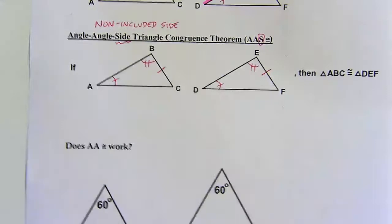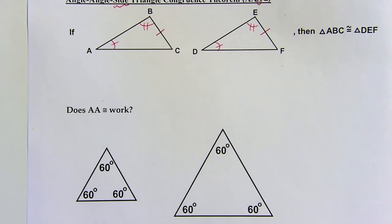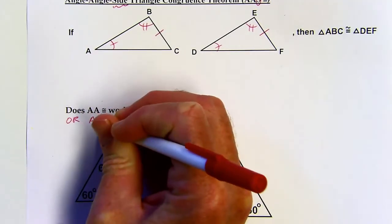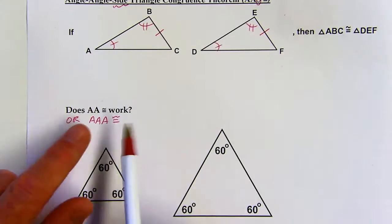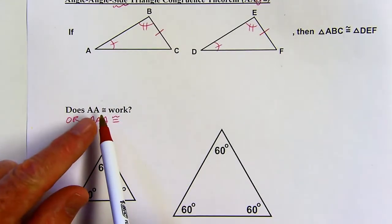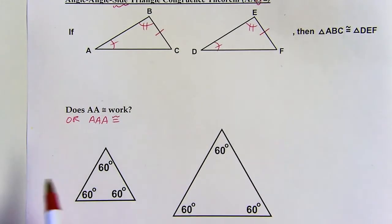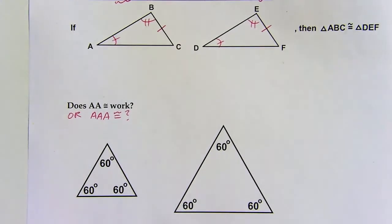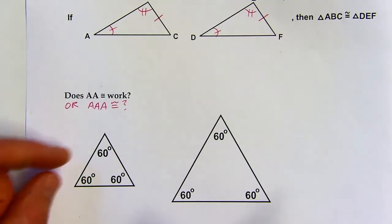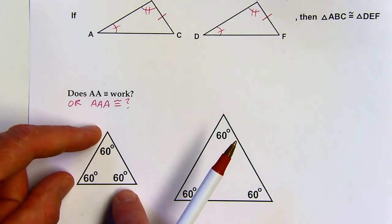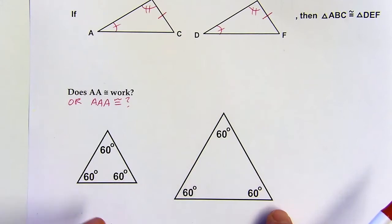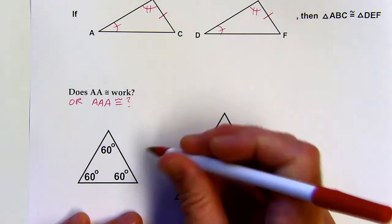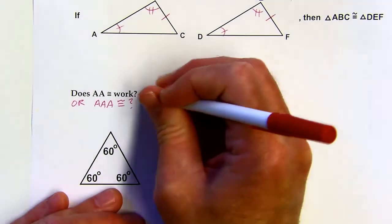Let's talk about AA. This is one that I see people try to use. If you have two angles, then the third angle is actually going to be congruent by the third angle theorem. So AAA or AA actually does not work. Here's the reason why: let's say we have an equiangular triangle and here's a bigger equiangular triangle. They're the same shape, but clearly not the same size — this one's bigger. So these are not congruent triangles, and that means AA doesn't work.